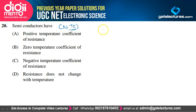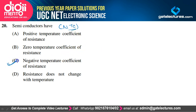Semiconductors have NTC (Negative Temperature Coefficient) of resistance. For intrinsic semiconductors this is definitely true. For highly doped extrinsic semiconductors, after approximately 300 K, NTC transforms into PTC. Since the question refers to semiconductors in general (intrinsic), the answer is NTC of resistance. Option C is the correct option.